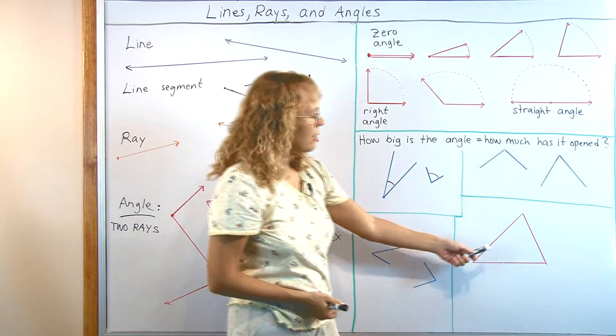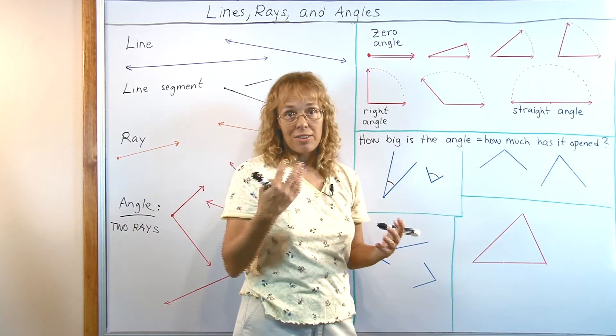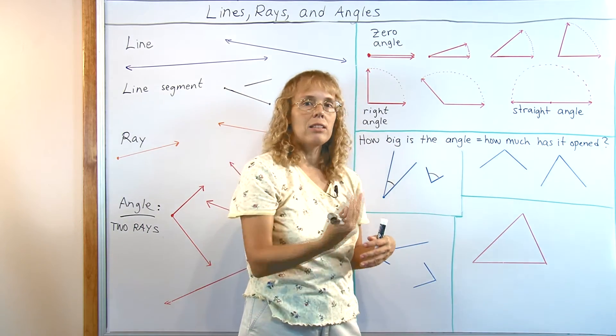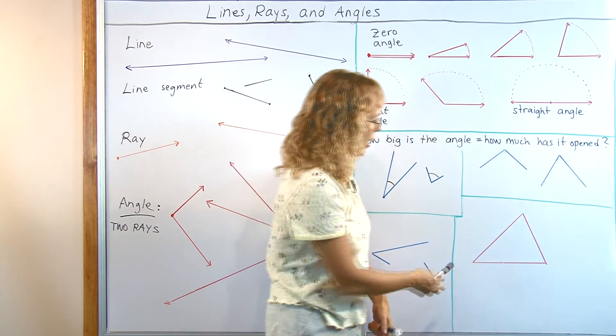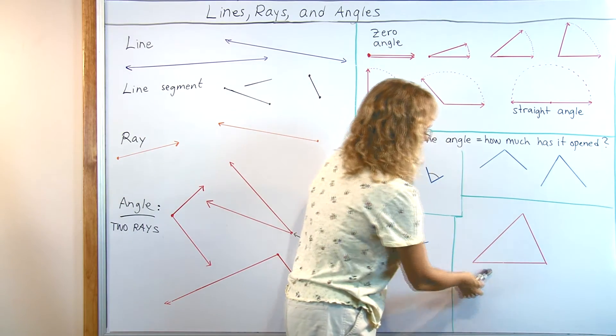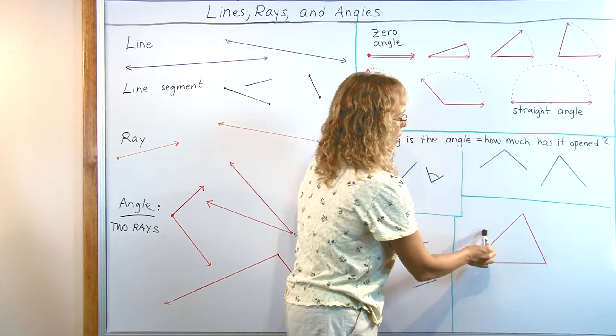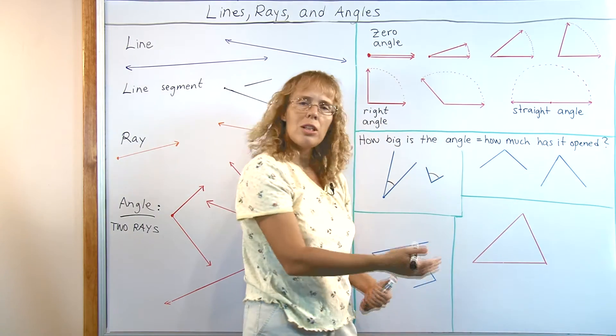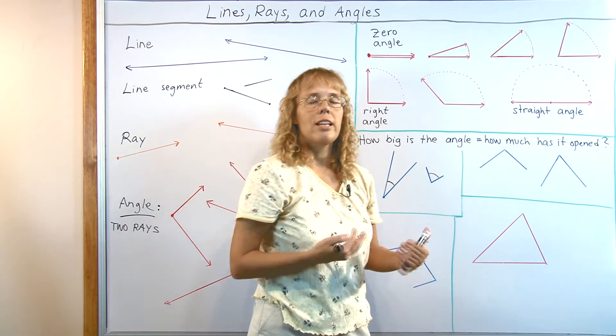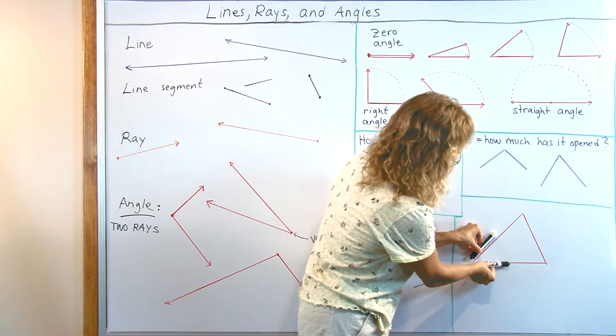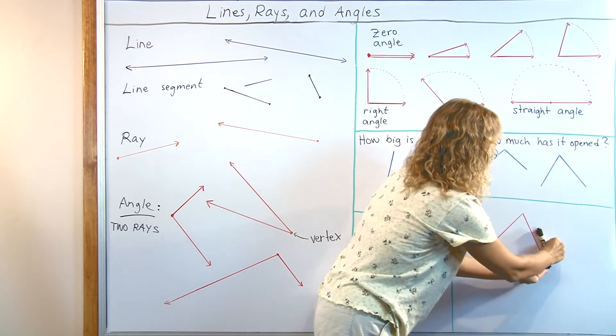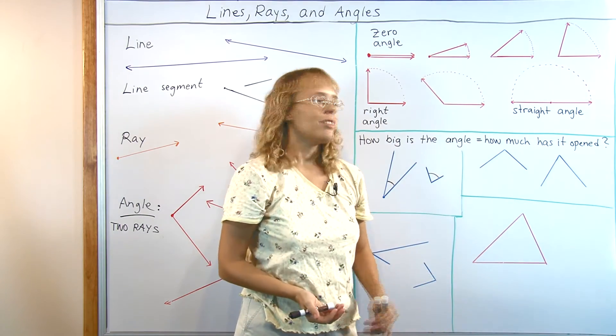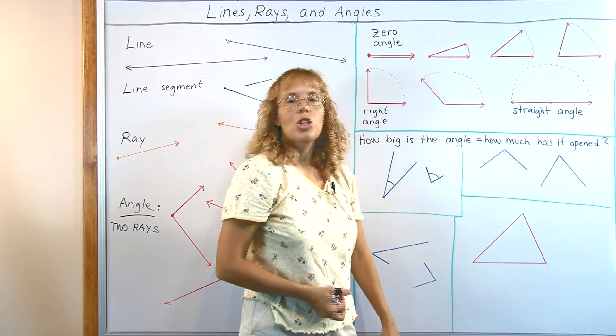Now, here is a triangle, which means it has three angles. Tri-angle, right? Three angles. And here's the first angle, here's the second angle, and then the third angle here. And let's say we want to know which angle is the greatest, the biggest angle. Would it be this angle here or this or this? And it might be hard to tell from this picture.